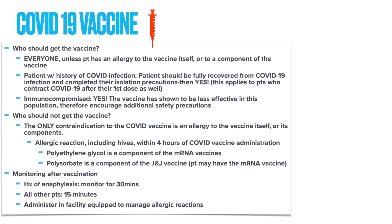So who should get the COVID vaccine? The only contraindication to the COVID vaccine includes an allergy to the vaccine itself or to its components. For example, if an allergic reaction including hives occurs within four hours of the COVID vaccine, this indicates an allergy. Examples of components that may cause an allergic reaction include polyethylene glycol, which is included in the mRNA vaccines (Pfizer and Moderna), and polysorbate, which is included in the J&J vaccine. However, if a patient has a documented allergy to polysorbate, although J&J is contraindicated, they may still get the mRNA vaccine instead.